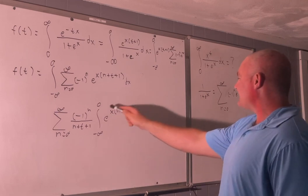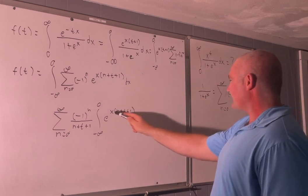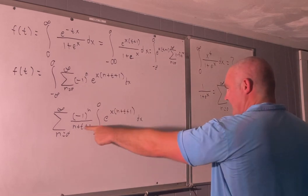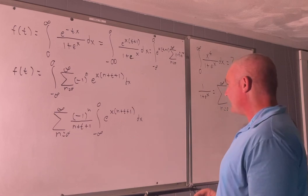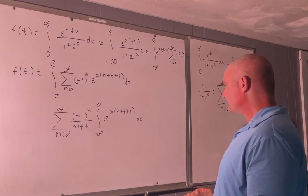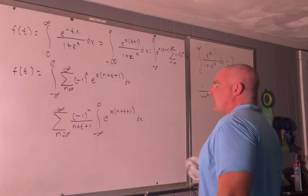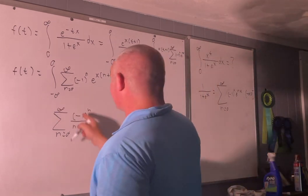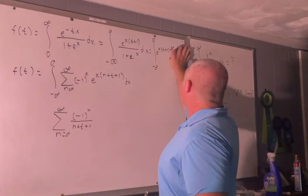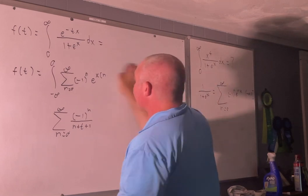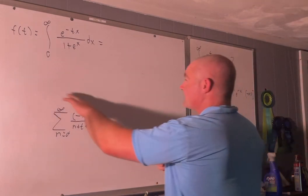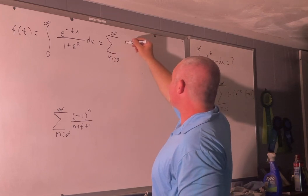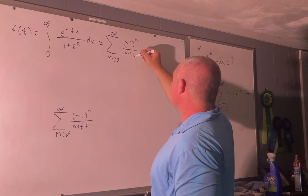This is going to be over n plus t plus 1. Because the indefinite integral of e to the x times n plus t plus 1 with respect to x is the same thing divided by that coefficient, and evaluating from negative infinity gives us 1 over n plus t plus 1. So after all that work, f of t equals the sum as n goes from 0 to infinity of negative 1 to the n over n plus t plus 1.